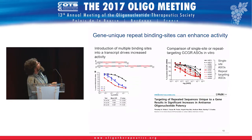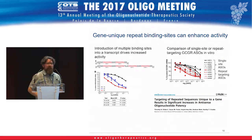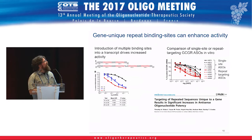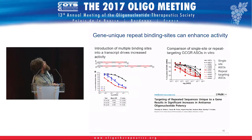What they showed very convincingly is that if you take a transcript and engineer it to have one, two, or four target sites, you can increase knockdown pretty readily. And if you look at endogenously repeated sites that naturally occur in the transcriptome — which occur more frequently than you might expect — you also see an increase, sometimes pronounced, where sites with repeats in the transcript are more likely to be active.